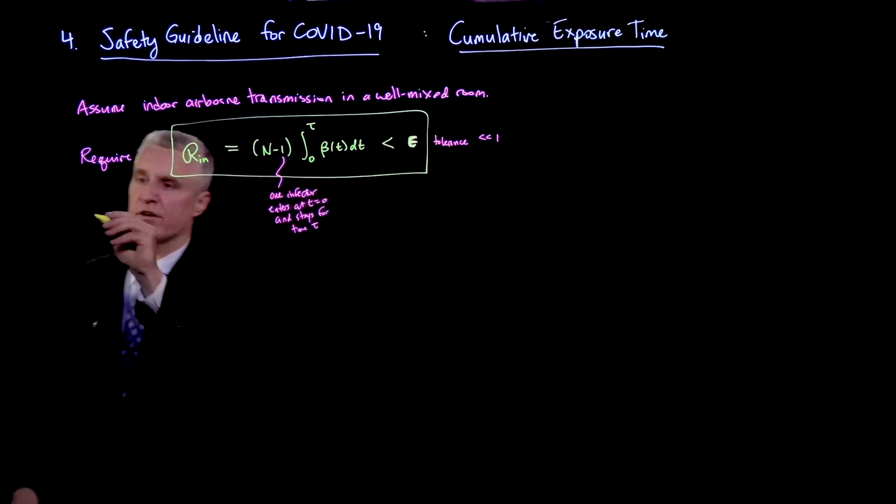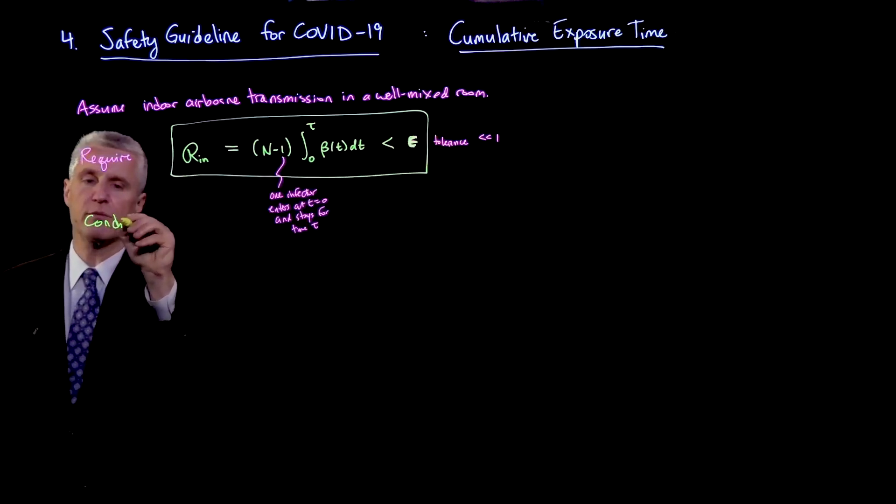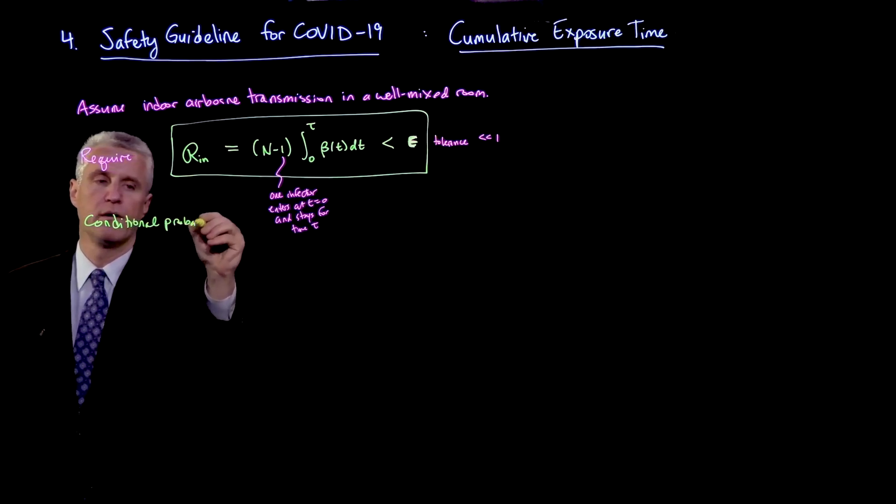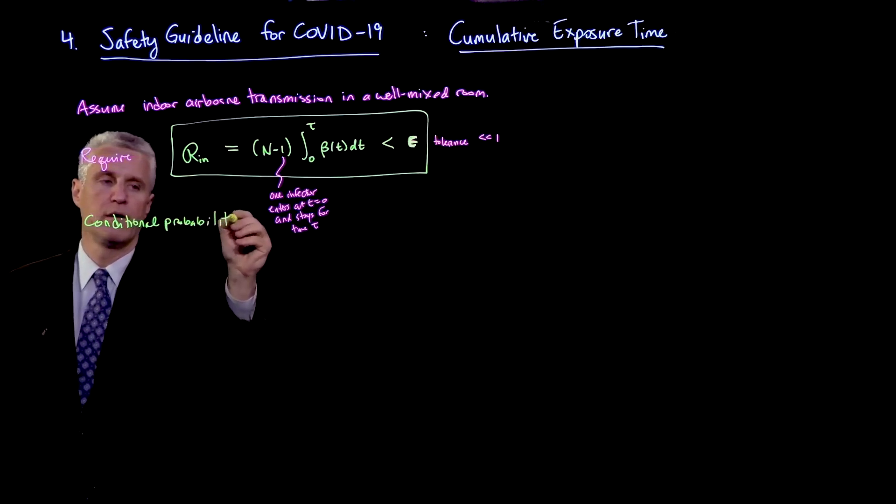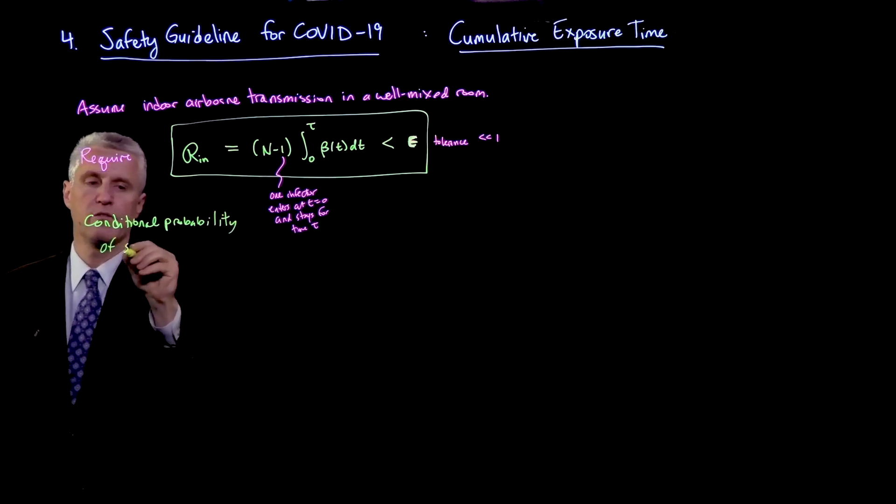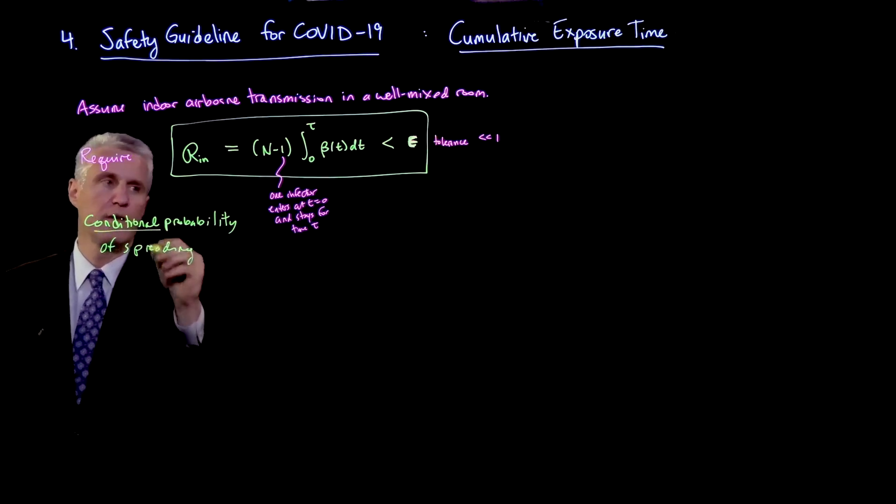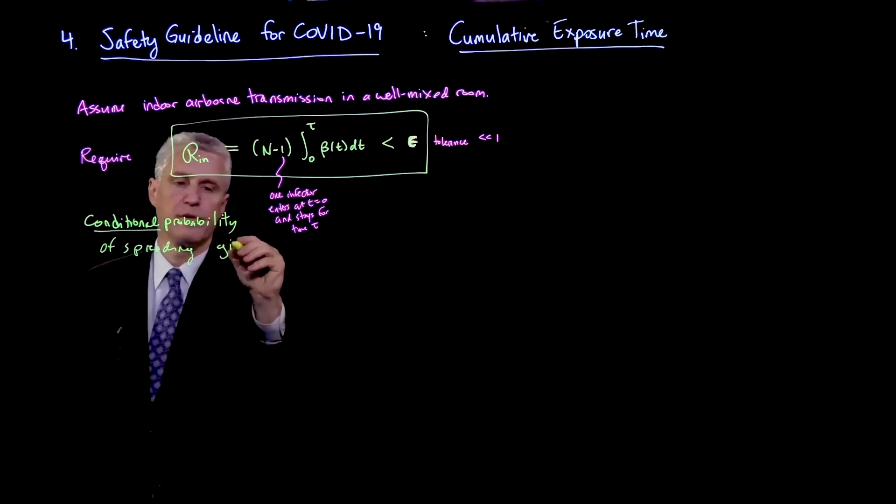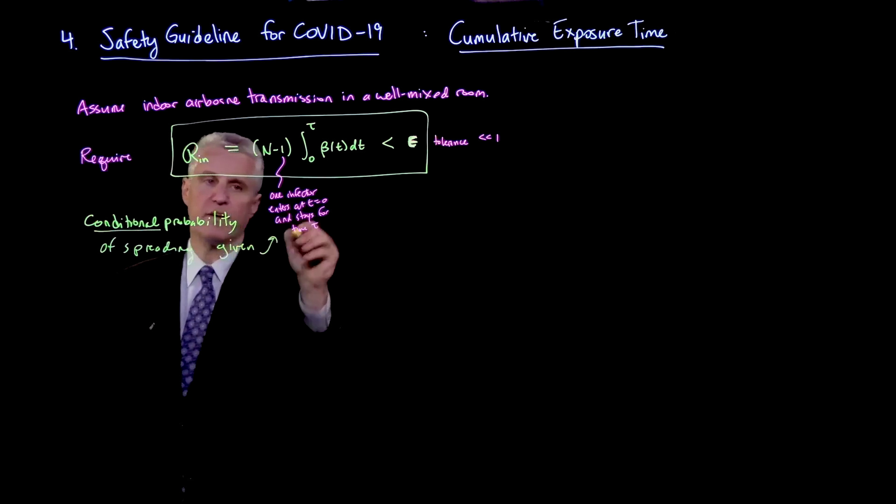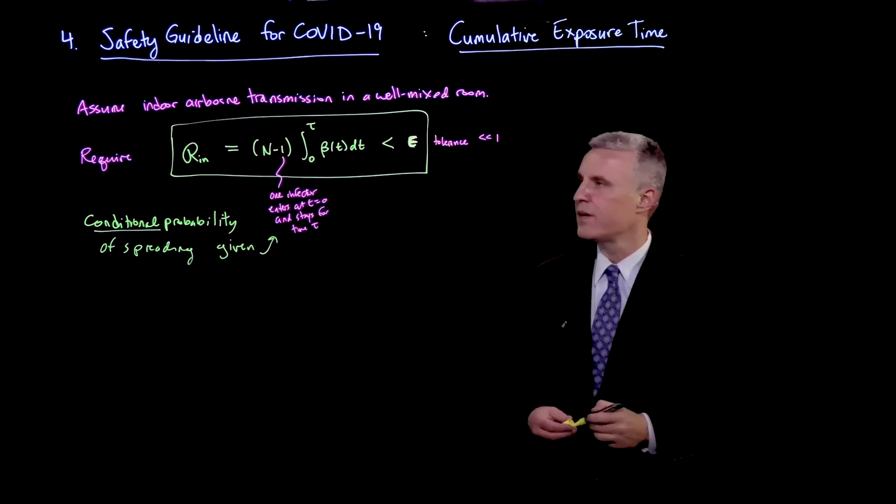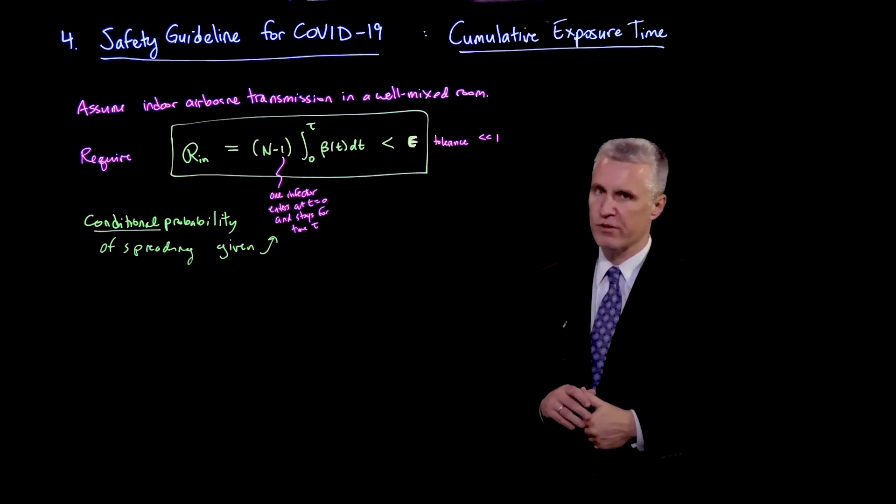So that is the basic thinking. It's basically the conditional probability of spreading, given that an infector enters at time 0 and stays for time tau. So that's basically how we formulate the guideline.